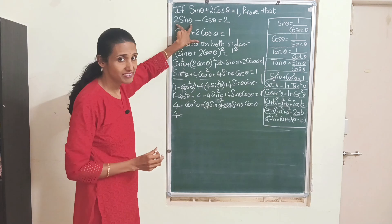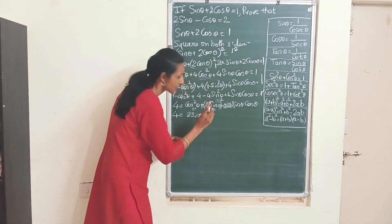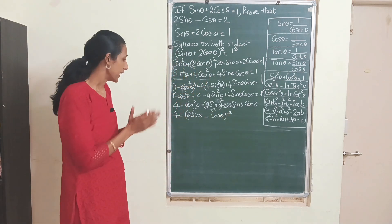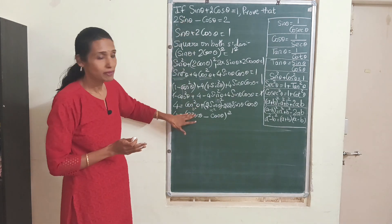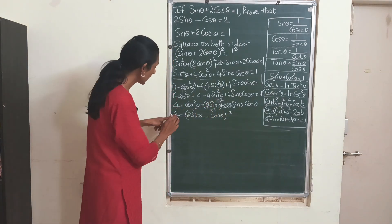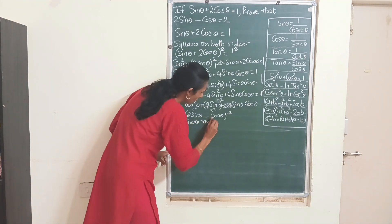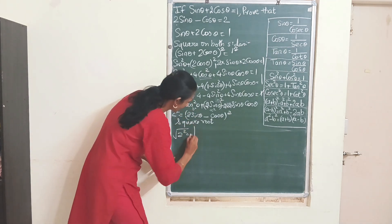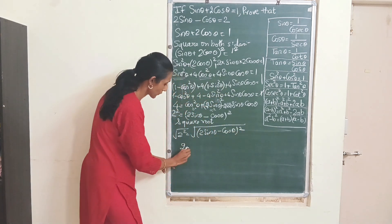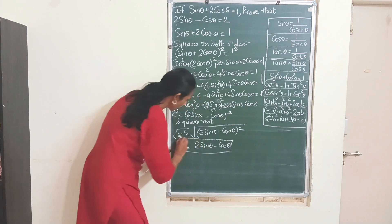We want 2 sin θ first, so we'll call this as A² and this as B². We'll get (2 sin θ minus cos θ)². Just see how much progress we have made. We have almost got the expression 2 sin θ minus cos θ. The whole square is there, we just have to get rid of the square and here you have 4. I can always write 4 as 2² and let me take square root on both sides. So I'll get 2 sin θ minus cos θ equals 2. We have got what we wanted to prove.